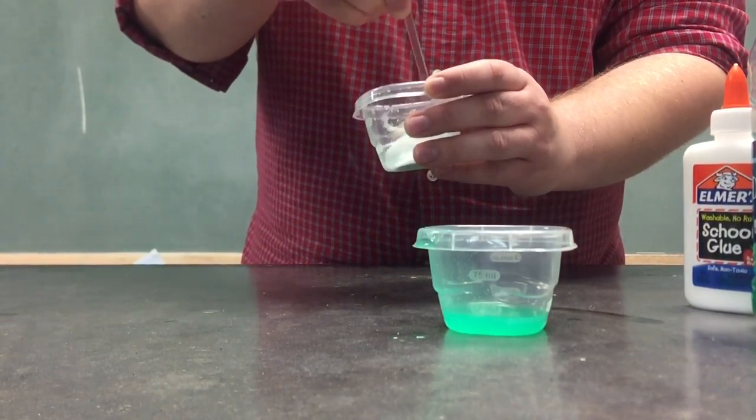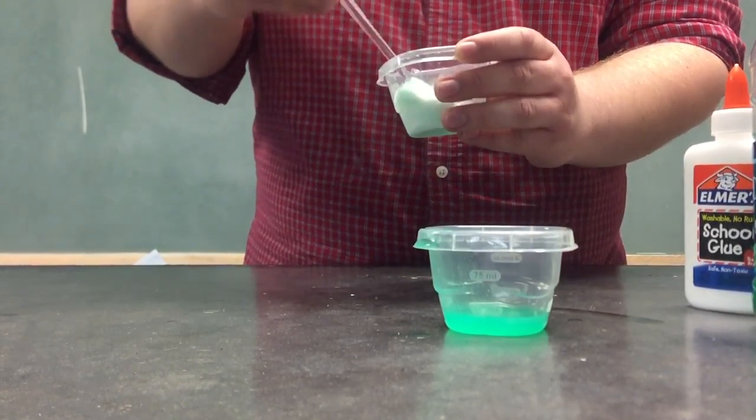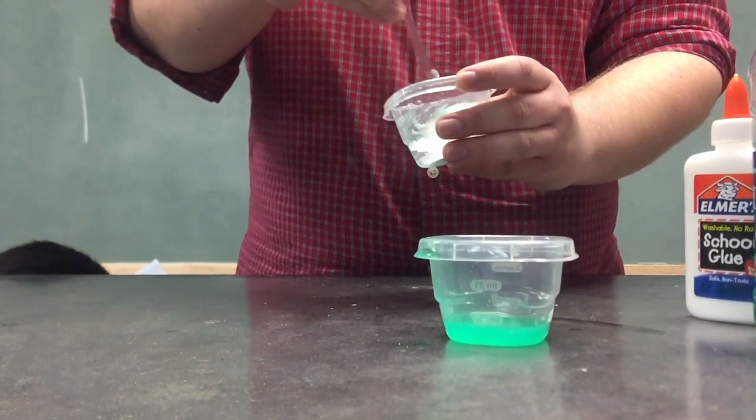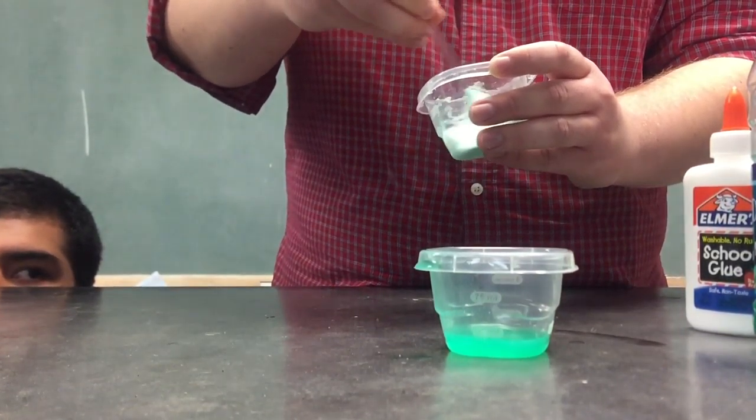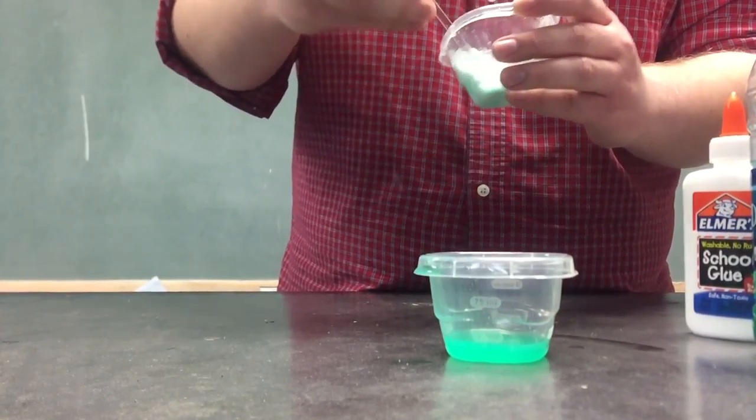As you mix it, you'll see that the glue starts clumping up together, just like it would be in Silly Putty, as you can see. Now, you keep mixing this until you get it all clumped together and it's not as watery.